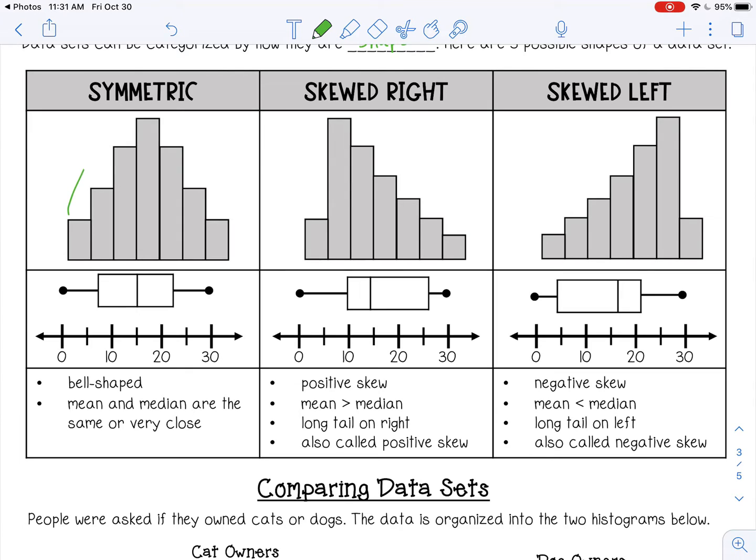So symmetric is kind of what we saw in that other example. There's one peak in the middle. It's a bell shape, which means the median and the mean are really close together. They're very similar. And for a box and whisker plot, it's also going to be kind of symmetrical. You're not going to have one really long whisker. The box looks symmetrical.